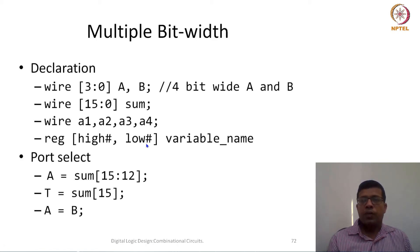If I have these multiple bits and I want to use only certain bits out of that, how do we do that? For example, here A is my 4 bit signal and my sum is 16 bit. Out of the 16 bit I want to select only certain 4 bits. I can say, for example, 12 to 15 of this sum I would like to assign to A.